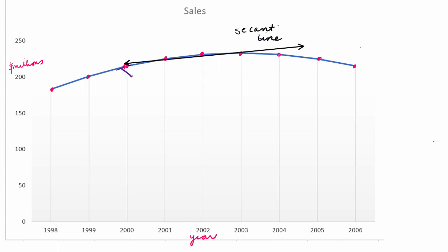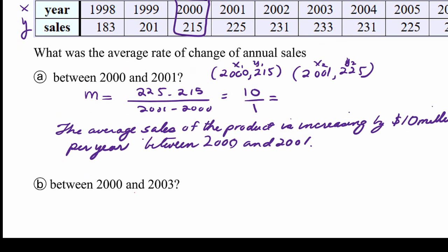And what we're going to do is we're going to find the slope of the line that is made when we connect the ordered pairs for x equals 2000 and x equals 2003. So I hope you're getting an idea of what this average rate of change does. So let's go back and do that calculation now. So our two years are from the table: year 2000, sales are 215 million, and year 2003, sales were 233 million dollars in the product.